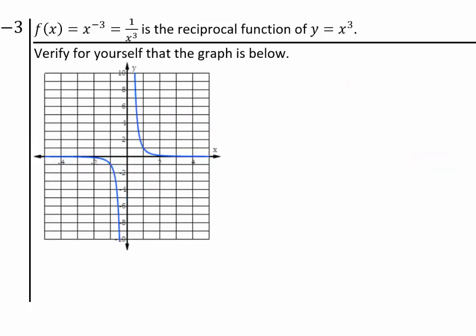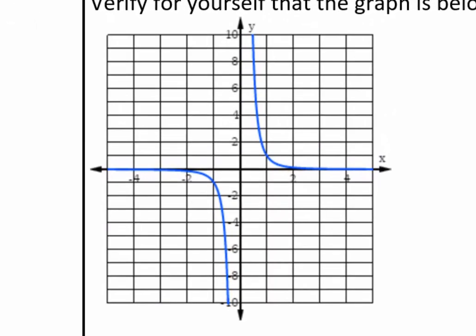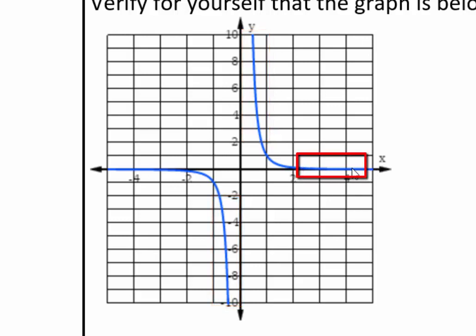All right, so assuming you've come back — the same principles apply. When x values get closer to zero, 1 over those values becomes very large. When x is negative and closer to zero, it will go to negative infinity — that's what this part of the graph shows. When x is very large going to infinity, 1 over x cubed becomes very small. Similarly, from the negative side, negative infinity will give values that are negative but very close to zero.